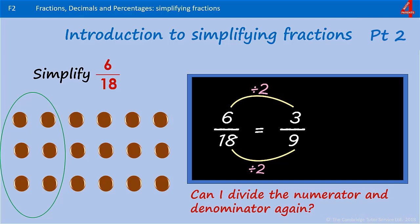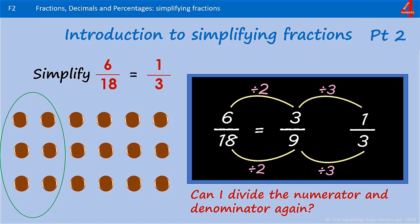Can I divide this any further? I can't divide them by 2, but I can divide 3 and 9 by 3, so let's go a bit further. 9 divided by 3 is 3, and 3 divided by 3 is 1. 6 eighteenths is the same as one third.